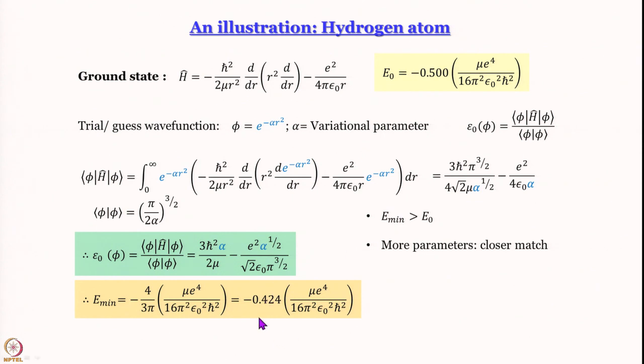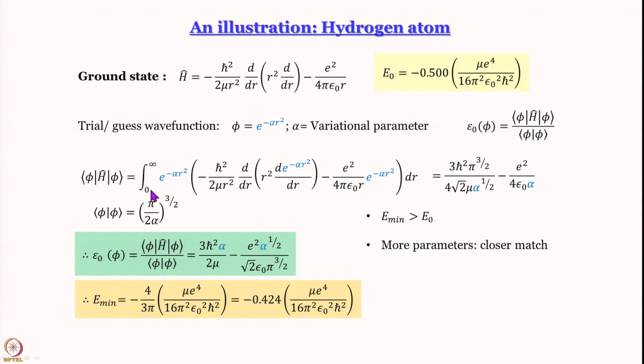We obtained 0.424 while the exact answer is 0.500. To get closer, we can introduce more parameters. Instead of the exponent being 2, I can write q and vary q. When q approaches 1, the Gaussian better matches the exponential decay, and the energy gets closer to the exact solution. I could also multiply by a prefactor. With more parameters, you always get a better match.